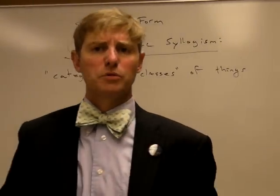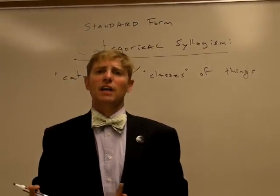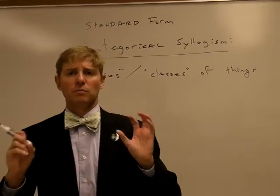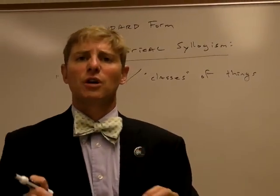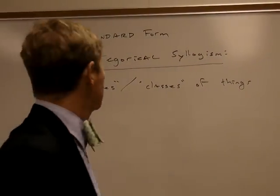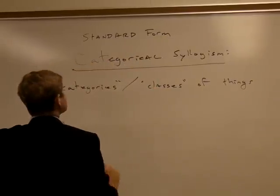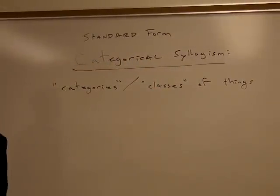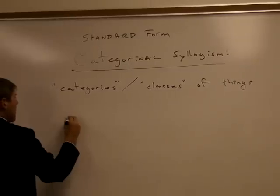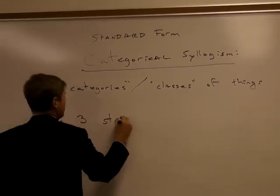So I'm talking about categories of things — could be groups of people, could be animal classifications, what have you. The main unit we're talking about are classes or categories of things. Now, a standard form categorical syllogism will contain three statements.